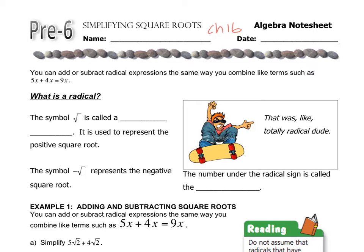The first thing we talk about are these things called radical expressions. You can add or subtract radical expressions just like you would add 5x plus 4x equals 9x. Up until now you've called this symbol a square root sign, but now we're actually going to call it a radical sign.